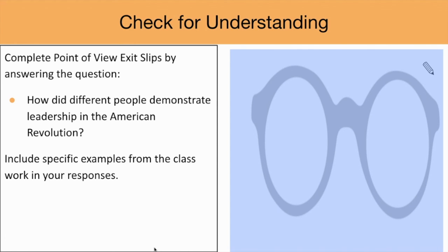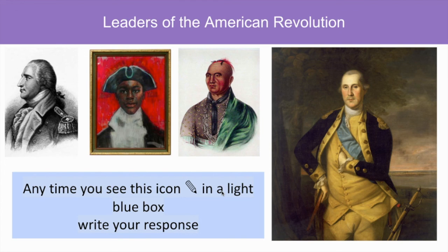A way that you can check for understanding is to have students complete a point-of-view exit slip by answering the following question: How did different people demonstrate leadership in the American Revolution? Ask students to include specific examples from the class work as well as the class presentation in their response. That concludes the Leaders of the American Revolution video. I hope this video was helpful — feel free to try any of the strategies out with your students.